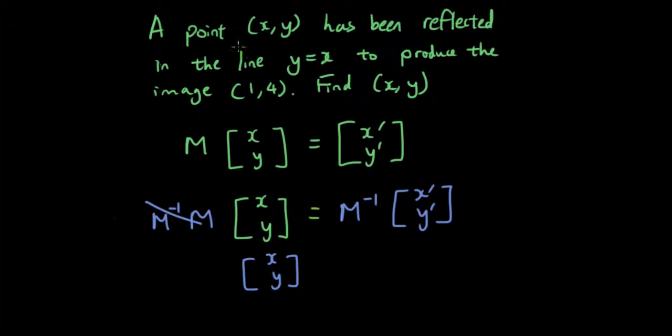So we're going to apply that to this question here. So if you guys remember a few tutorials ago we did one on how to reflect in the line y equals x. So the reflection matrix for that if you refer back to that tutorial is 0, 1, 1, 0.